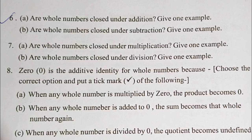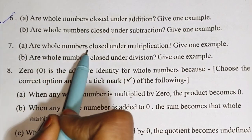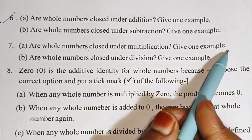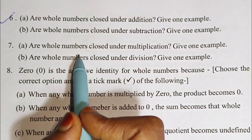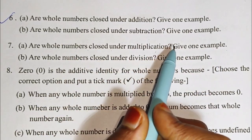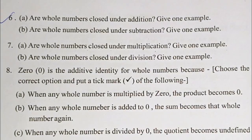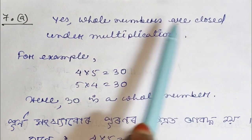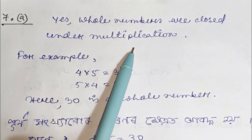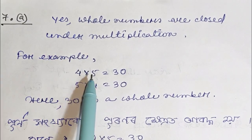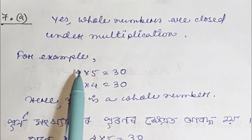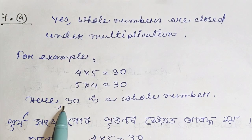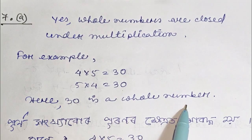Question number 7a: Are whole numbers closed under multiplication? Give one example. The answer is yes. Whole numbers are closed under multiplication. For example, 4 multiplied by 5 equals 30. Here 30 is also a whole number.